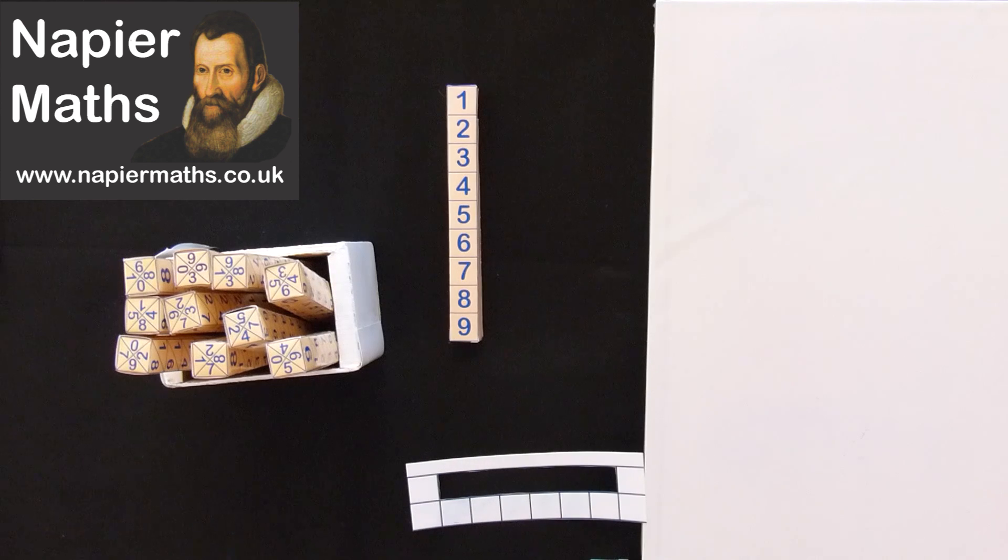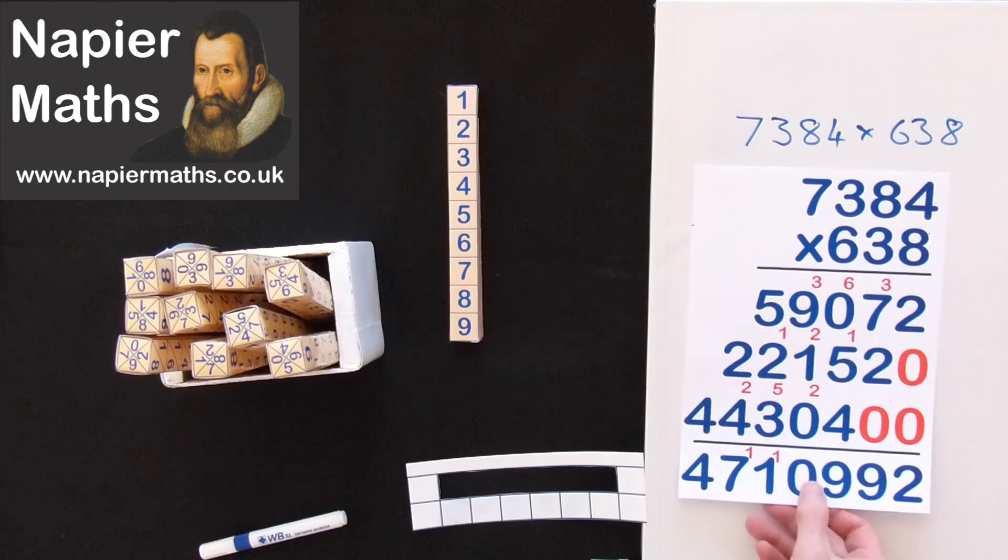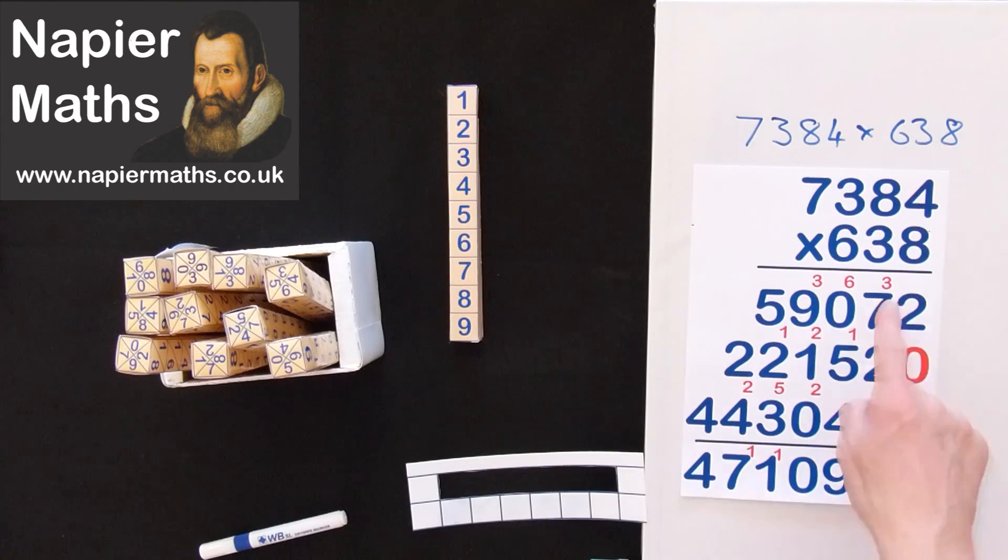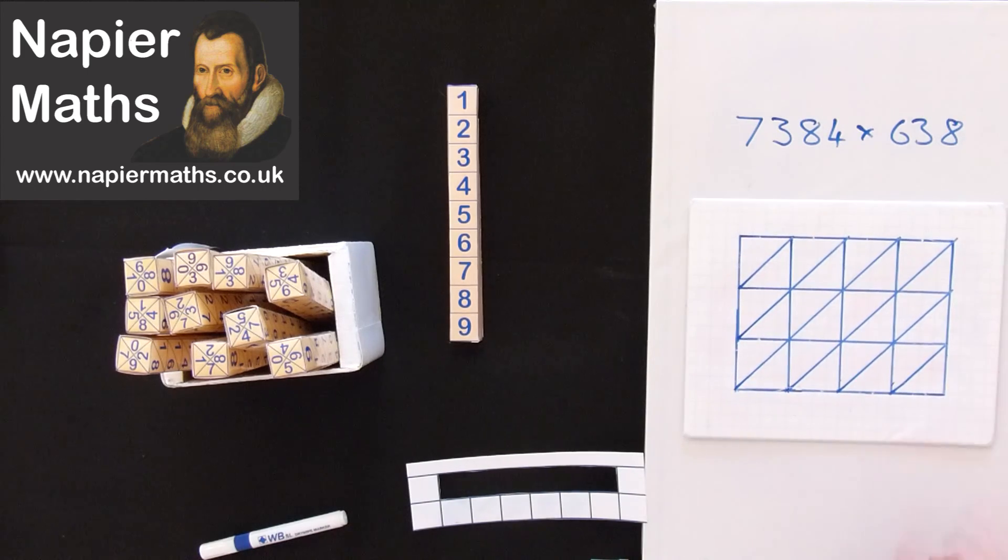For the final example, I'm going to do 7,384 times 638. Now we're onto the really difficult sort of stuff. Normally, there's the traditional method of doing it with all the carries, extra zeros, all the complications. A bit hard going. As you've guessed, we're not going to do it by that method. We're going to do it really easily using Napier's bones. We're going to need a slightly bigger grid this time, so I've prepared it earlier to speed things up a bit.